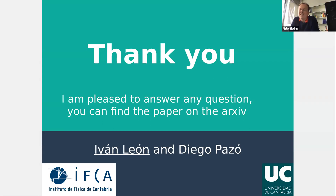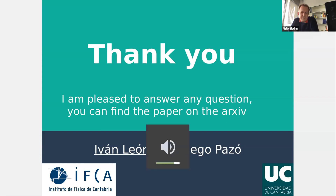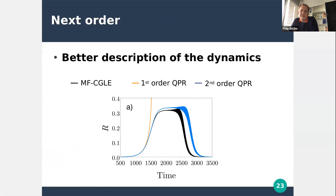Thank you, Ivan, for the nice talk. I don't currently see questions in the Q&A, but please post them or raise your hand. One question from myself: when you go to second order, the results qualitatively match the simulated trajectory much better. Do you expect anything extraordinary to happen at even higher orders, or will it just monotonically approach the real trajectory? Sometimes adding orders makes things worse before getting better, but the jump from first to second order seems quite strong.